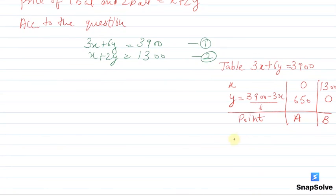Same way we will draw the table for the next equation. Our next equation is x plus 2y equals 1300. We have x and y, which is (1300 minus x) divided by 2.